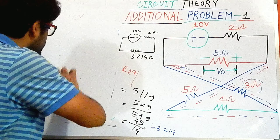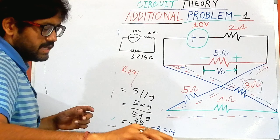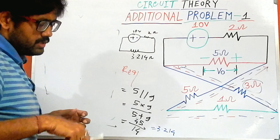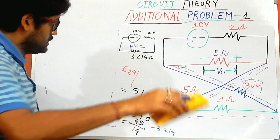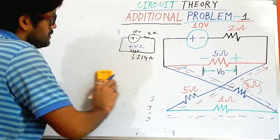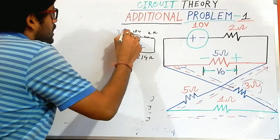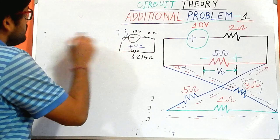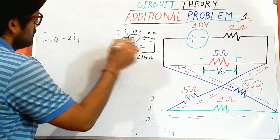The voltage across this particular resistance is V0, as given in our mathematical problem. If I apply KVL inside this loop, with a current i1 flowing inside this closed loop, the equation begins: minus 10 volt minus 2·i1...